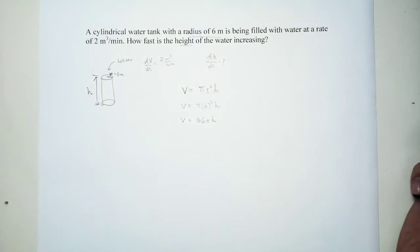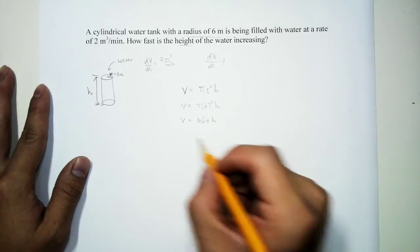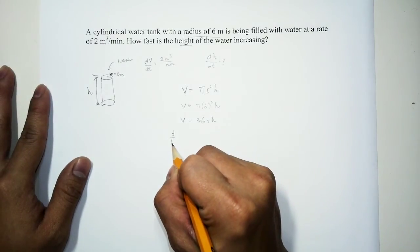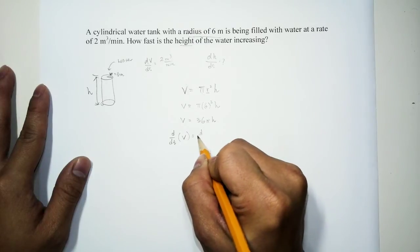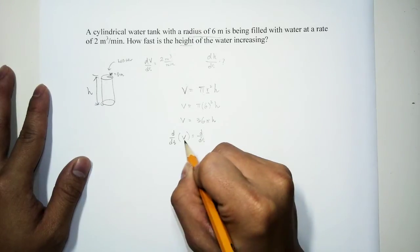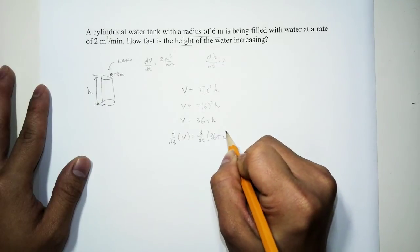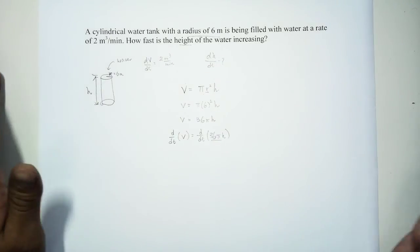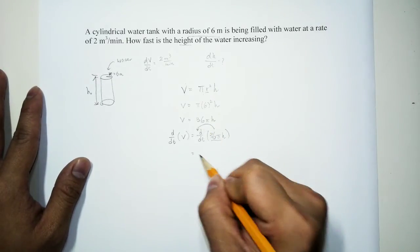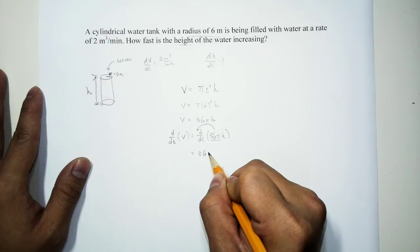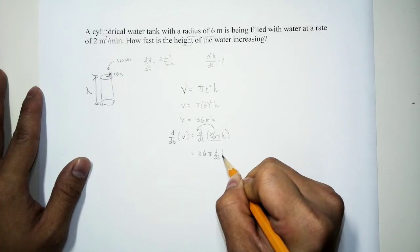Now we are going to differentiate this equation with respect to time. So with proper notation, we should write it this way: d/dt of V is equal to d/dt of 36π h. Now since 36π is just a number, we can put these numbers up front. So it's basically the same thing as saying 36π d/dt of h.